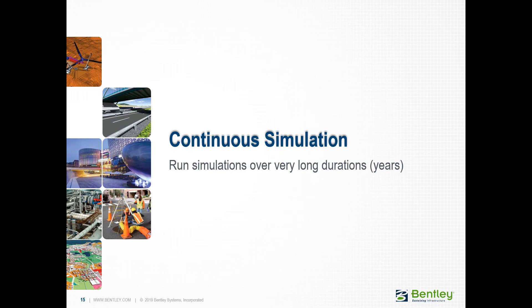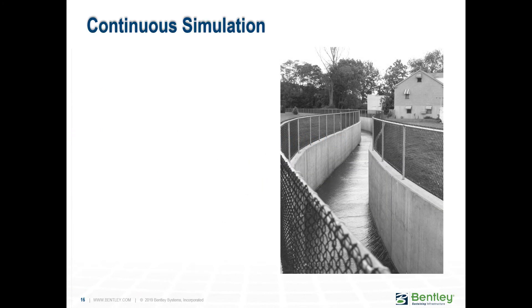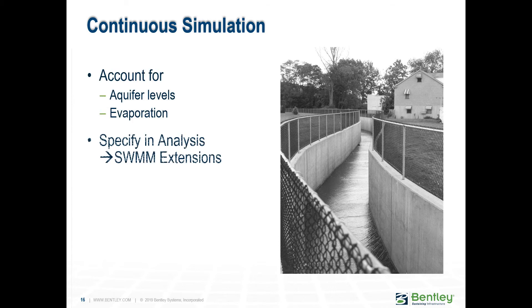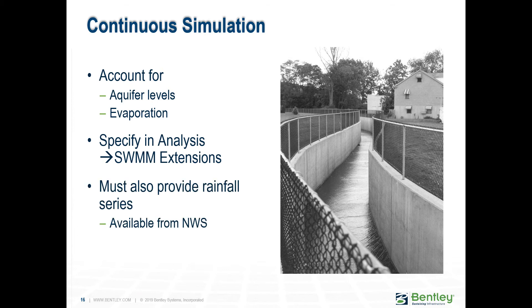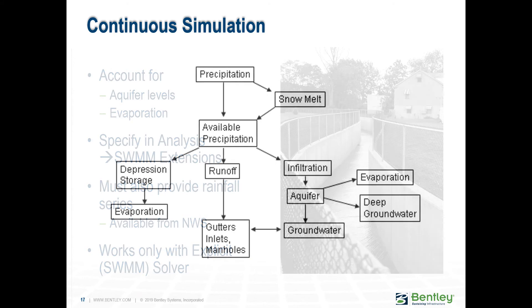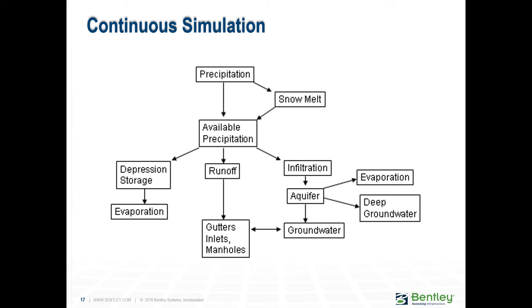Now about continuous simulation. When you do long-term continuous simulation, you need to account for things like aquifer levels and evaporation, which are not very important in event-oriented analysis. All this information can be specified in the components menu within SWMM. Another important thing is to provide the rainfall series, also available for long-term simulations, and again it's only applicable for the explicit solver. In event hydrology, once water becomes infiltration, it doesn't get back into the sewer. With long-term simulation, it may re-enter as base infiltration.